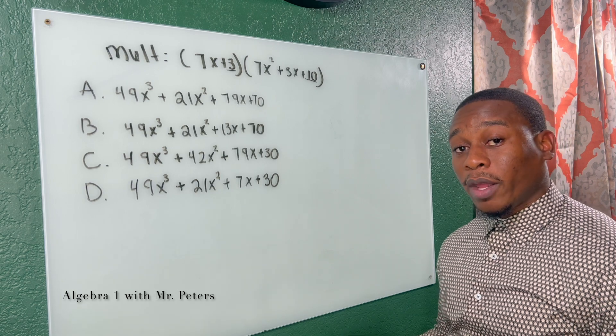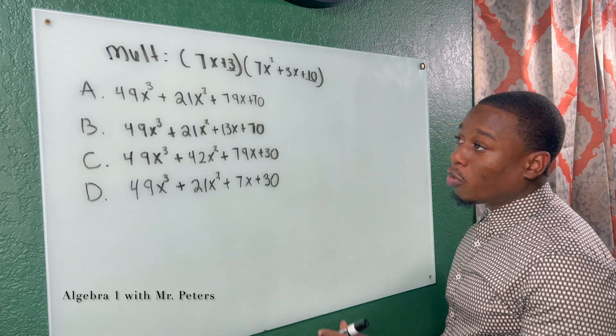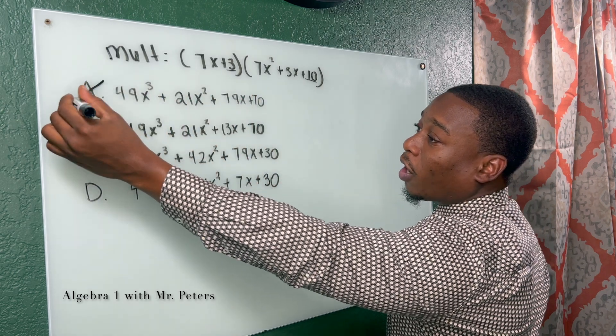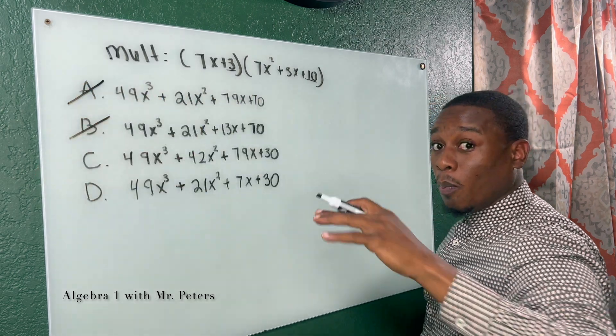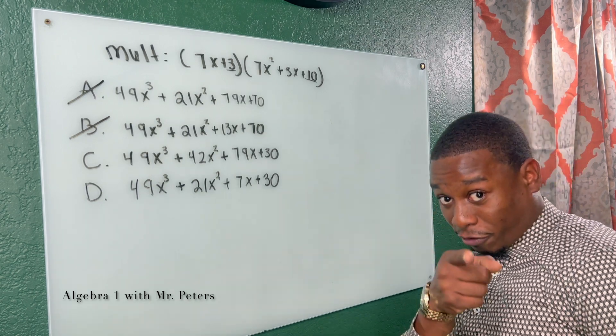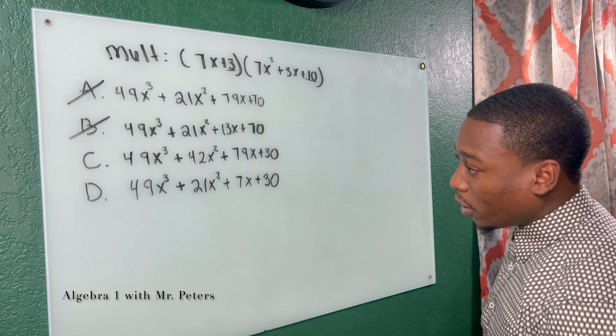So what does that mean? We know that the last number, the constant number with no variable should be 30. So when I look at A and B, they have a constant of 70. So bam, now we went from 25% chance of getting it right to 50. Please make sure you practice process of elimination.